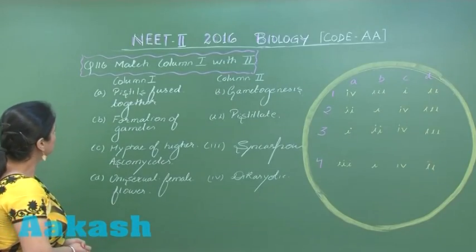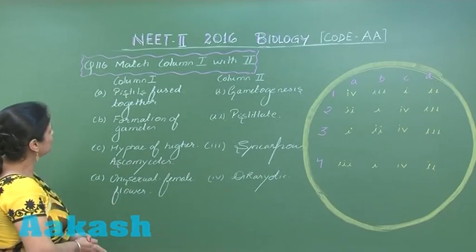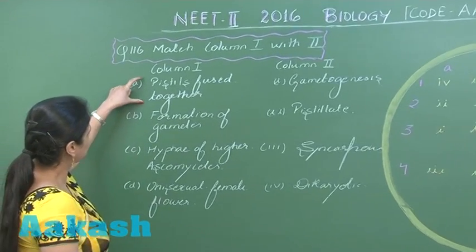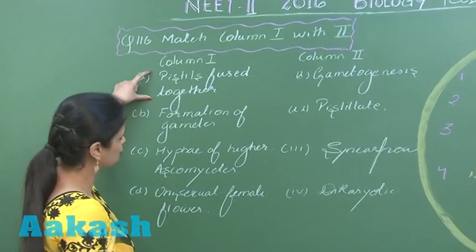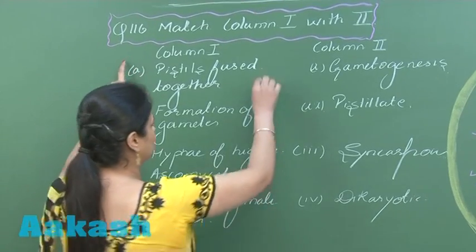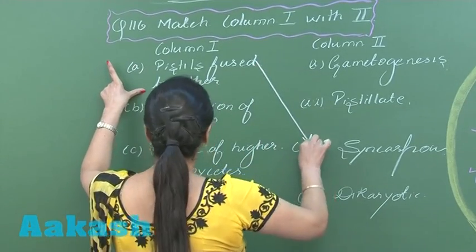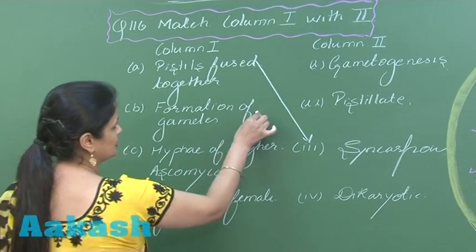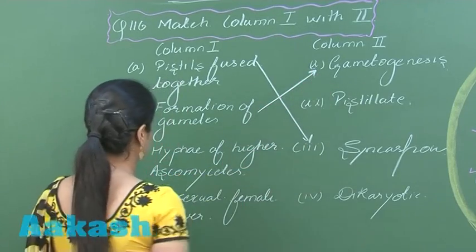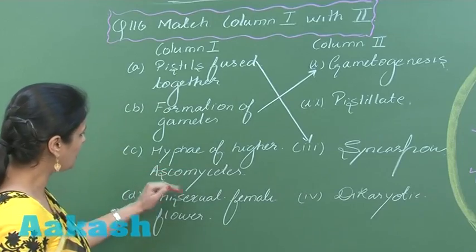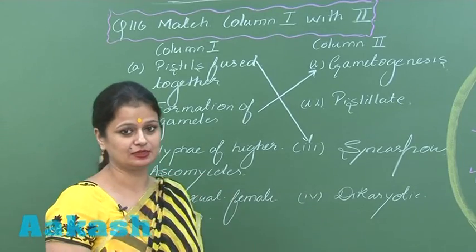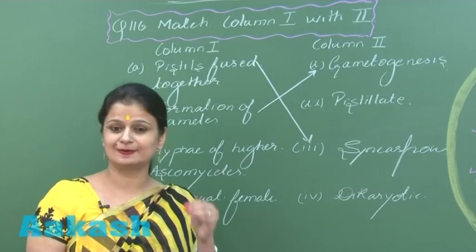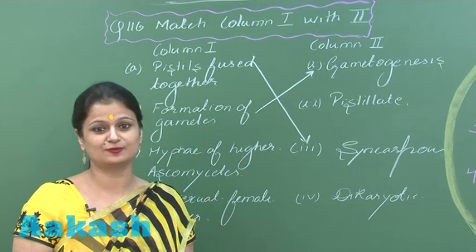In question number 116, we have to match column one with two. The first option is pistils fuse together — this condition is called syncarpous. The next term, formation of gametes, this process is known as gametogenesis. Regarding hyphae of higher ascomycetes, in ascomycetes as well as basidiomycetes there is formation of dikaryotic mycelium.